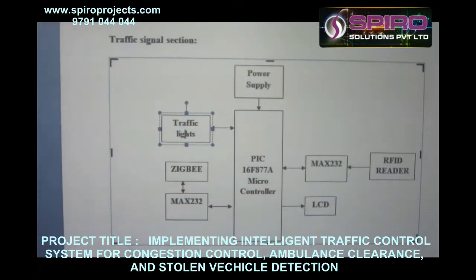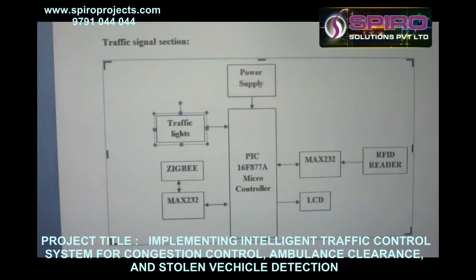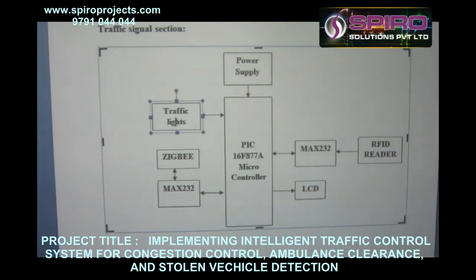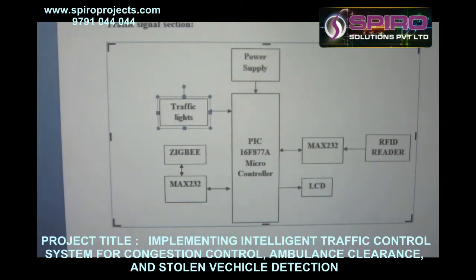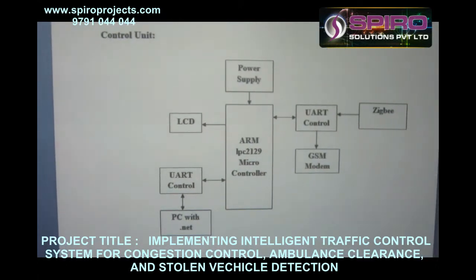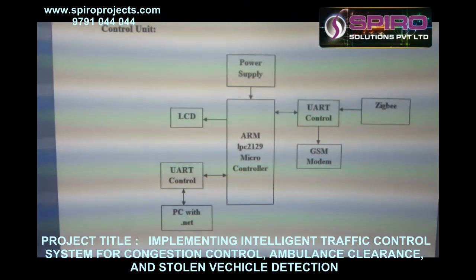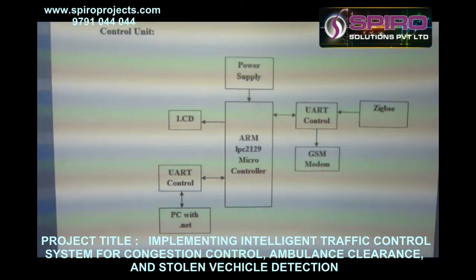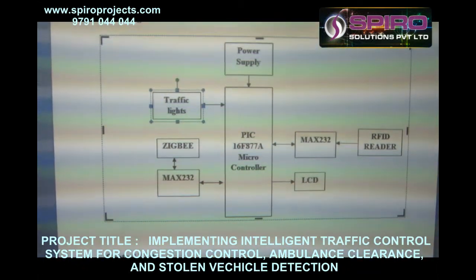This is our proposed system. The traffic signal section uses a PIC16F8 microcontroller, interfacing the traffic light mechanism using ZigBee, Max232 power supply, RFID reader, and LCD. The control unit consists of an ARM LPC2129 microcontroller interfacing the power supply, LCD, PC with dot net, using ZigBee and GSM.